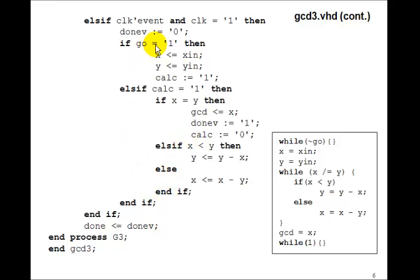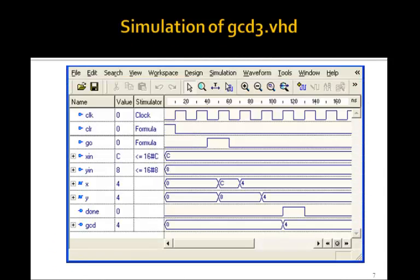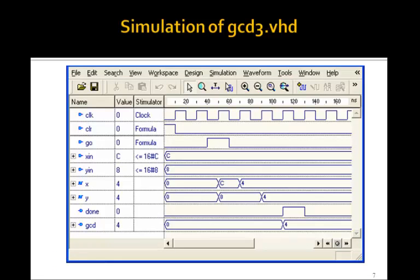So this entire program here replaces the data path and the control unit, and putting it all together is all replaced by this simple algorithm, just written as is. So this would be a big savings if it worked. And here's the simulation, and indeed it works. Here's GO.